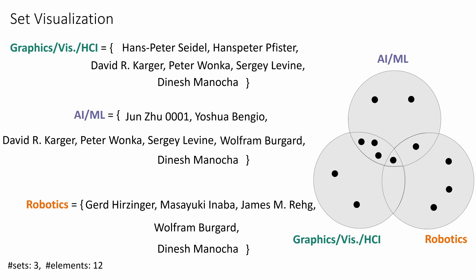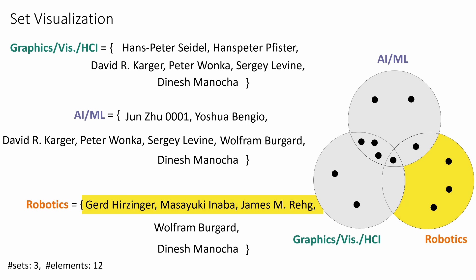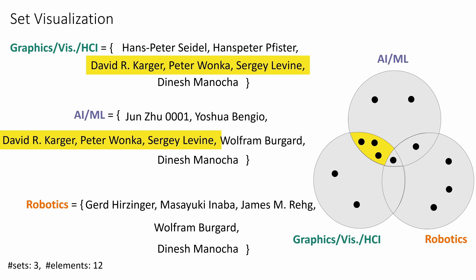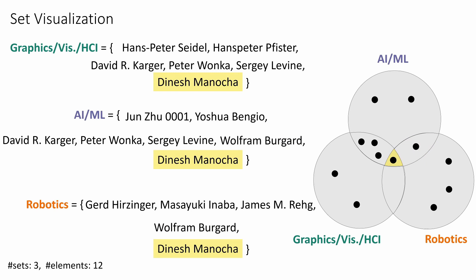Hans-Peter Seidel and Hans-Peter Pfister published papers only in Graphics with HCI, so they belong exclusively to that set. Similarly, Jiansu and Yoshua Bengio published only in AI/ML, while Gerd Herzinger, Masayuki Inaba, and James M. Rigg published only in Robotics. Three researchers published in both AI/ML and Graphics with HCI, so they are placed in the intersecting region. Wolfram Burgard published in Robotics and AI/ML. One researcher, Dinesh Manocha, published in all three fields, so a dot is placed in the center of the Venn diagram.